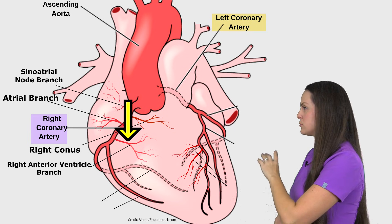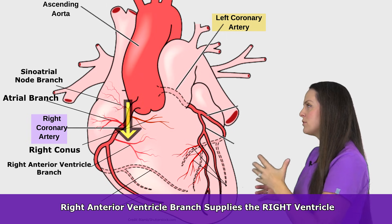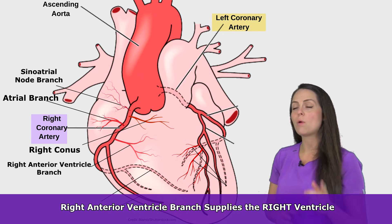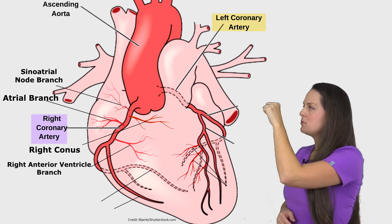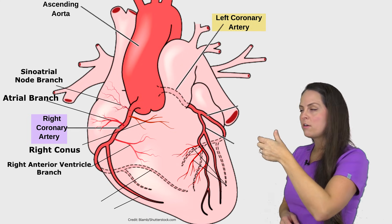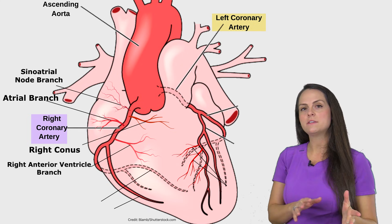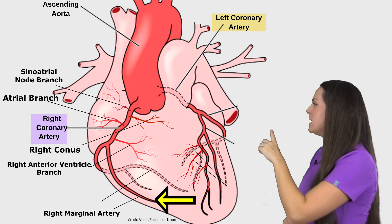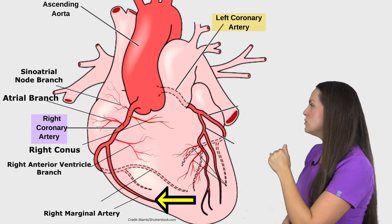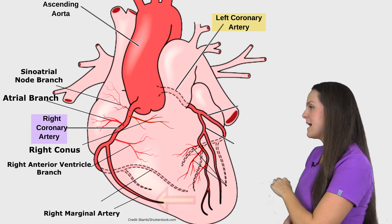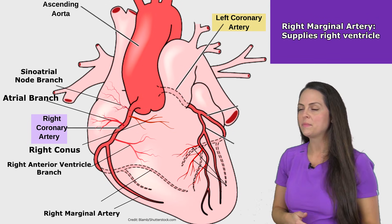Traveling further down the right coronary artery, we branch off into the right anterior ventricle branch — and again, let the name help you, as this branch helps supply that right ventricle. Then the right coronary artery splits off into a big branch: the right marginal artery. This artery goes down toward the apex of the heart and is a major supplier of our right ventricle.